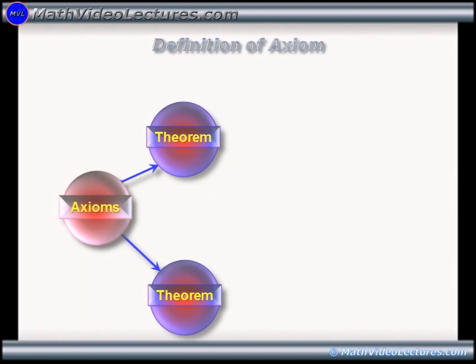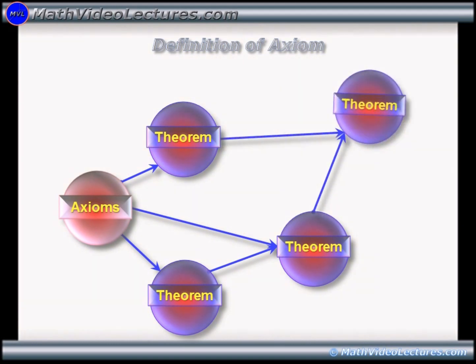Now, a theorem can be deducted from axioms and/or one or more other theorems which have been previously deducted from axioms and/or other proven theorems.